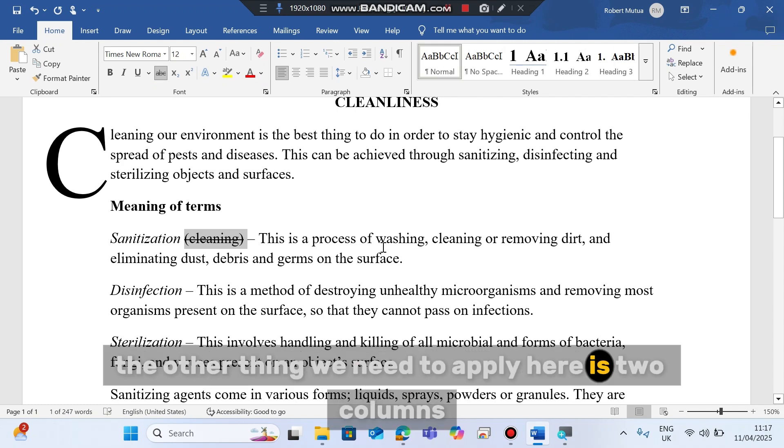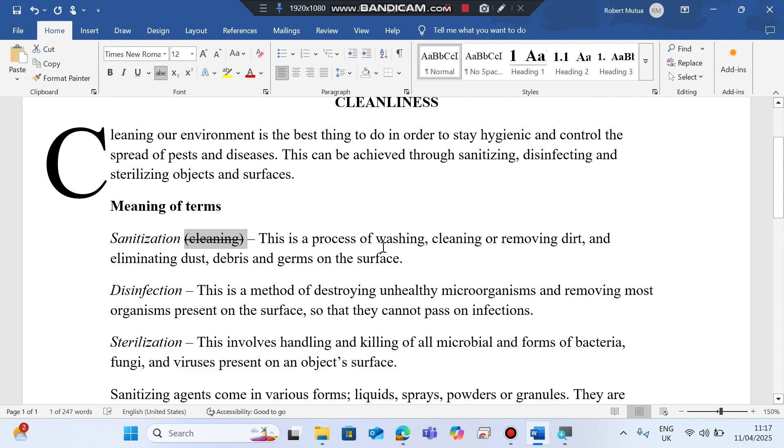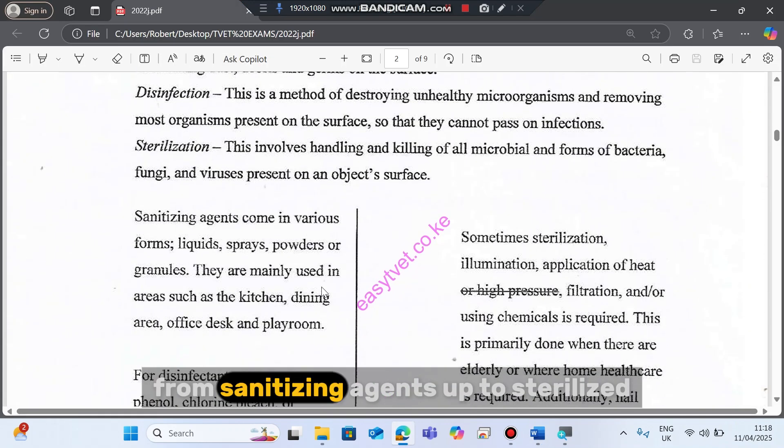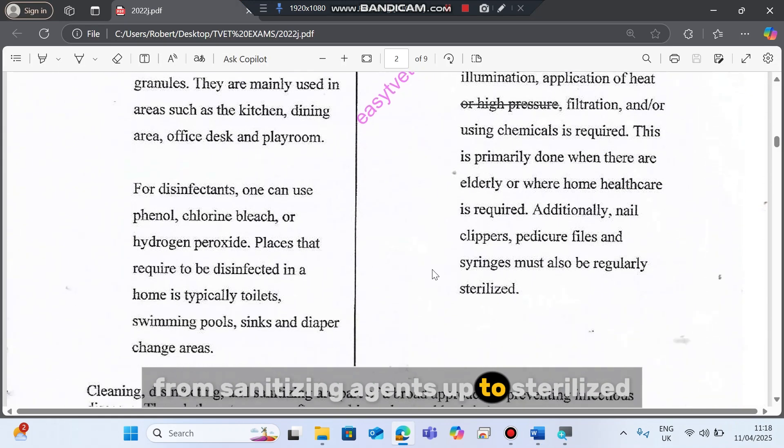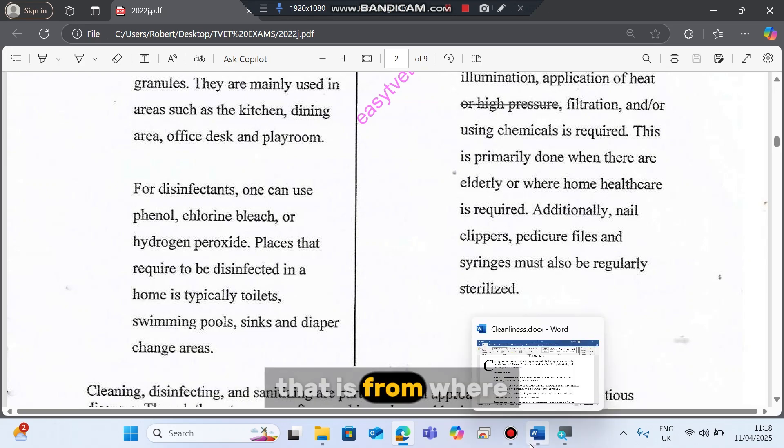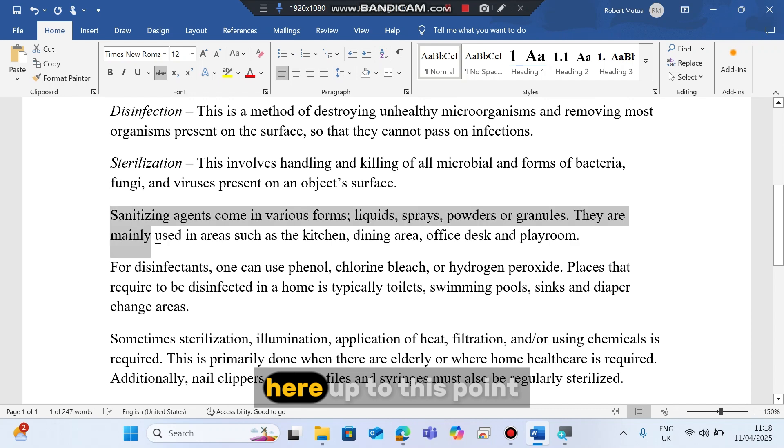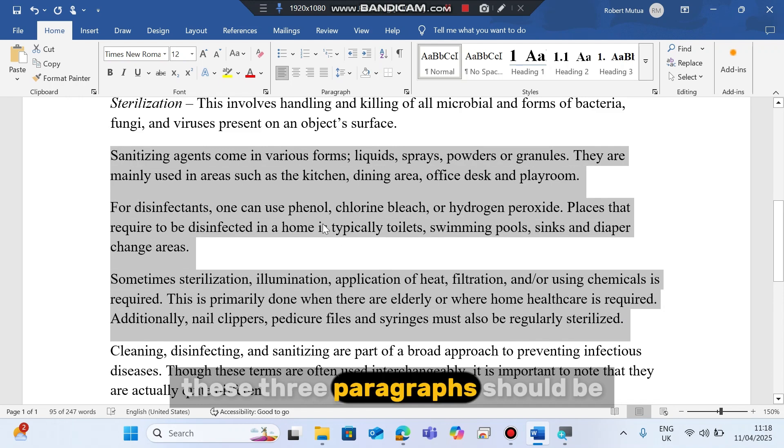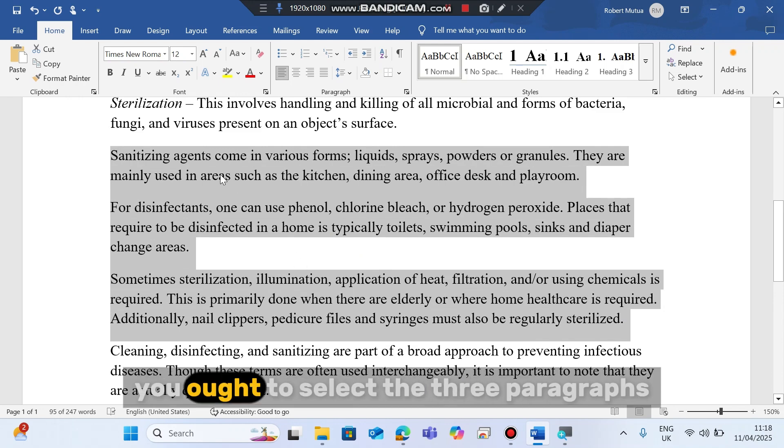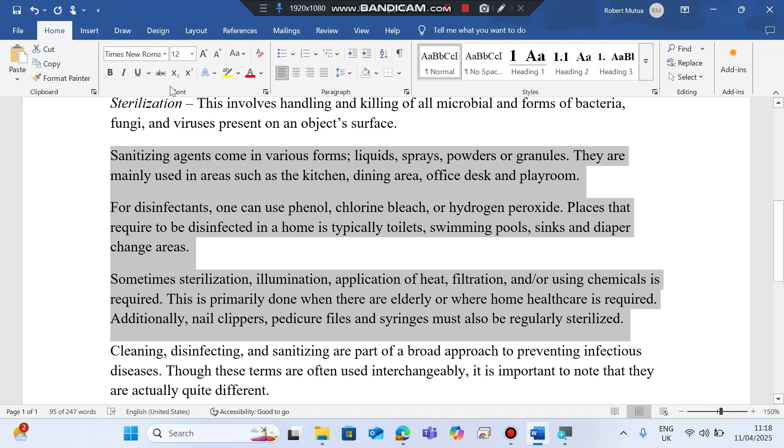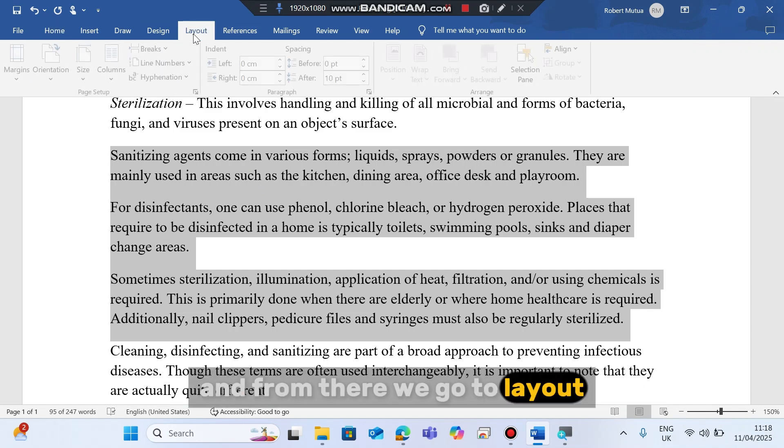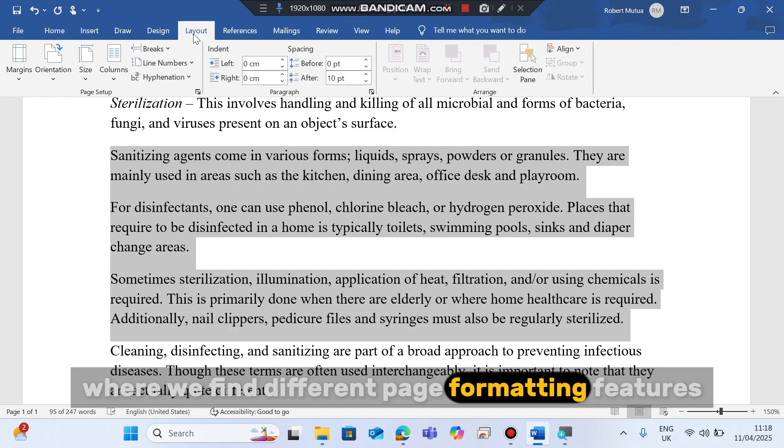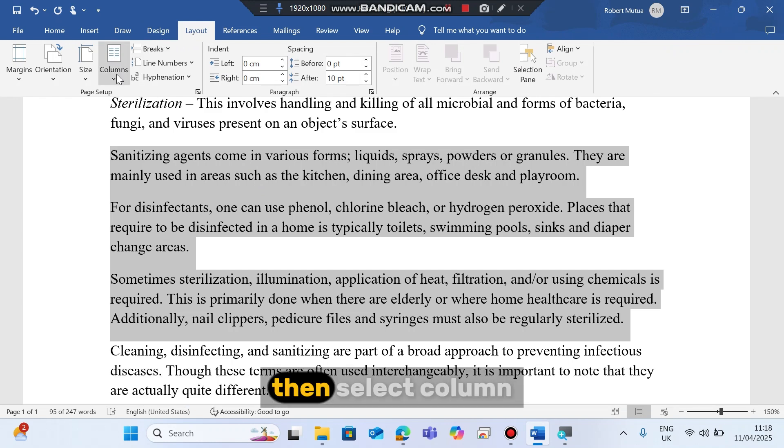So the other thing we need to apply here is two columns. Where is this two column? From sanitizing agents up to paralyzed, from here up to this point, these three paragraphs should be divided into two columns. So the first thing to do, you ought to select the three paragraphs.